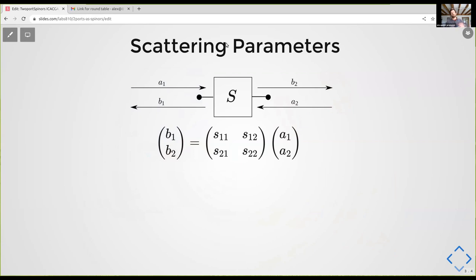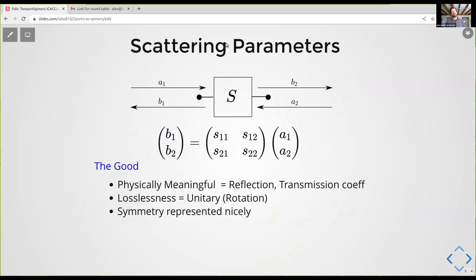Okay, so scattering parameters, that's the formalism we use. What's good about these are that they're physically meaningful. So the elements of this scattering matrix relate the incident waves, which are the A's, which are complex numbers, to the reflected waves, which are B's. And the scattering parameters themselves, so the elements of the matrix, are reflection and transmission coefficients. So you can interpret them physically.